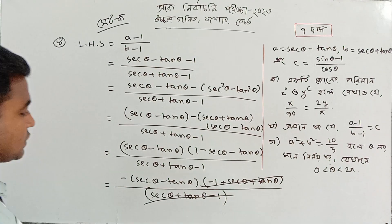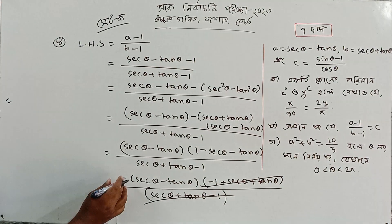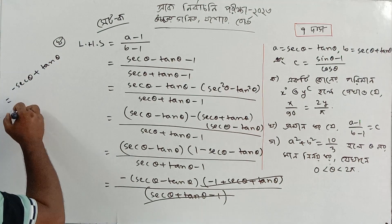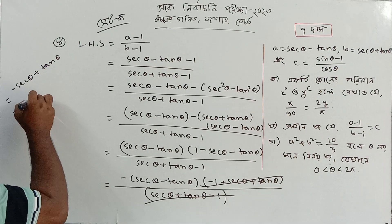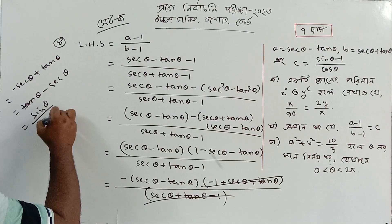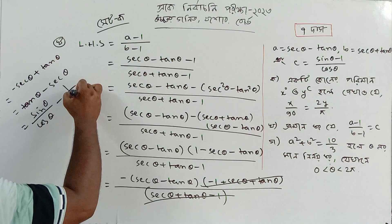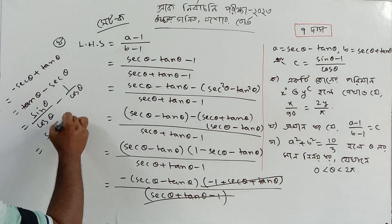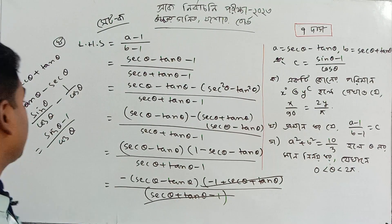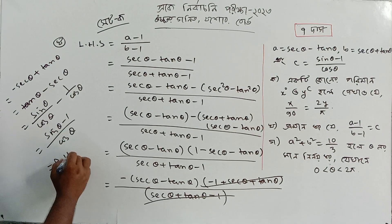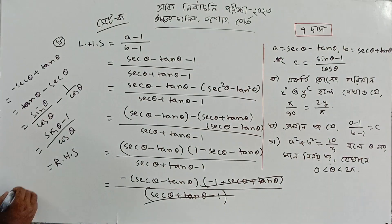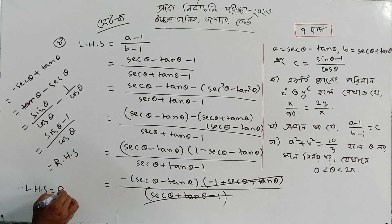Let me show you the third way. At the top, the part is minus sec theta plus tan theta. Taking tan theta, instead of minus sec theta, plus sec theta plus sec theta. And this is the right hand side.